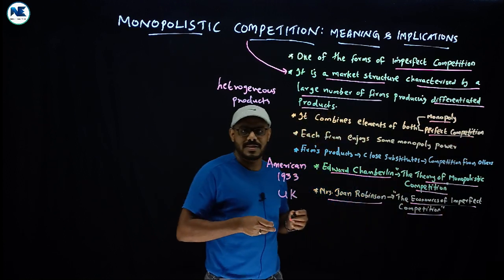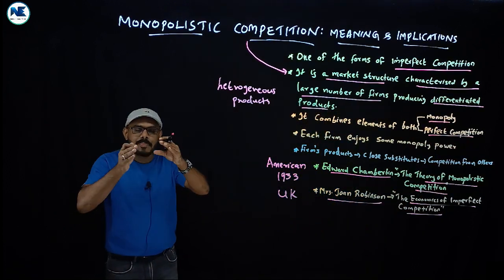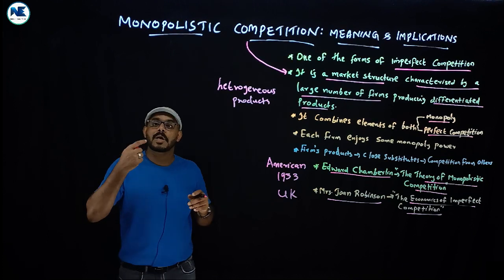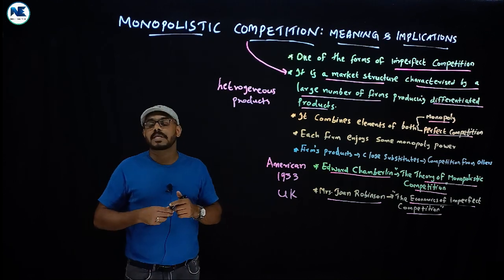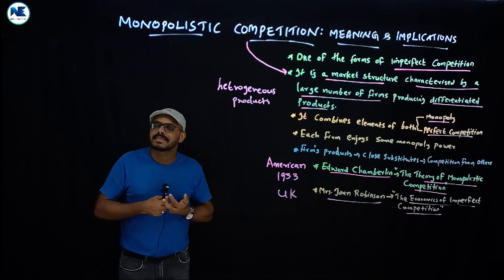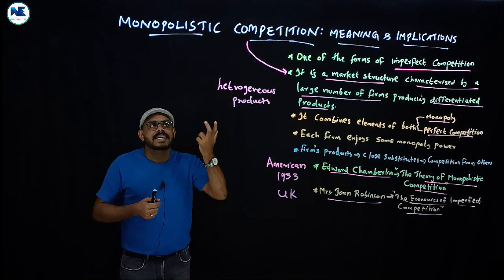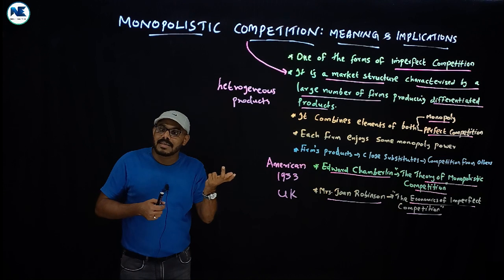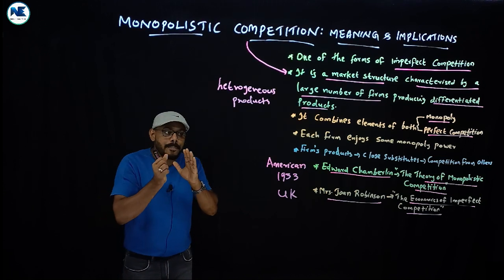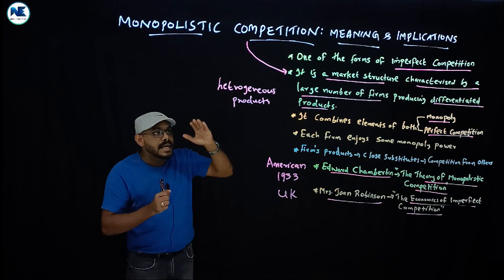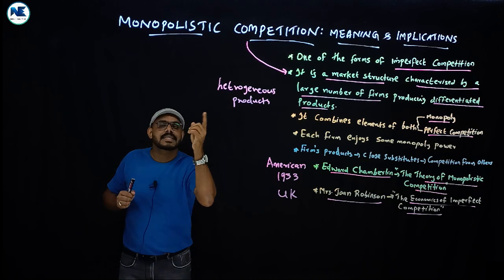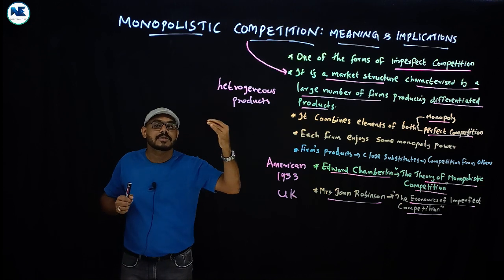Under perfect competition the key assumptions are: large number of buyers and sellers, homogeneous product, free entry and exit, and perfect knowledge. Monopolistic competition replaces homogeneous products with heterogeneous products, making it imperfect in nature.